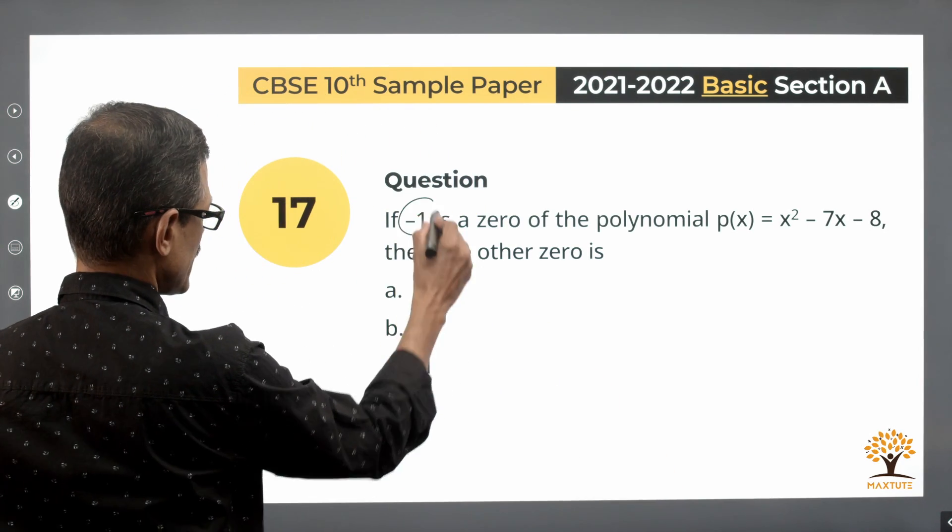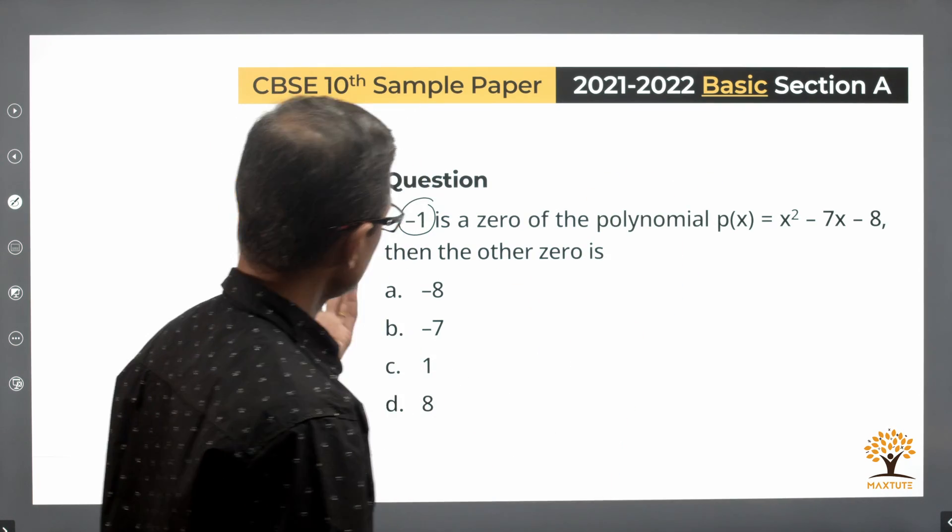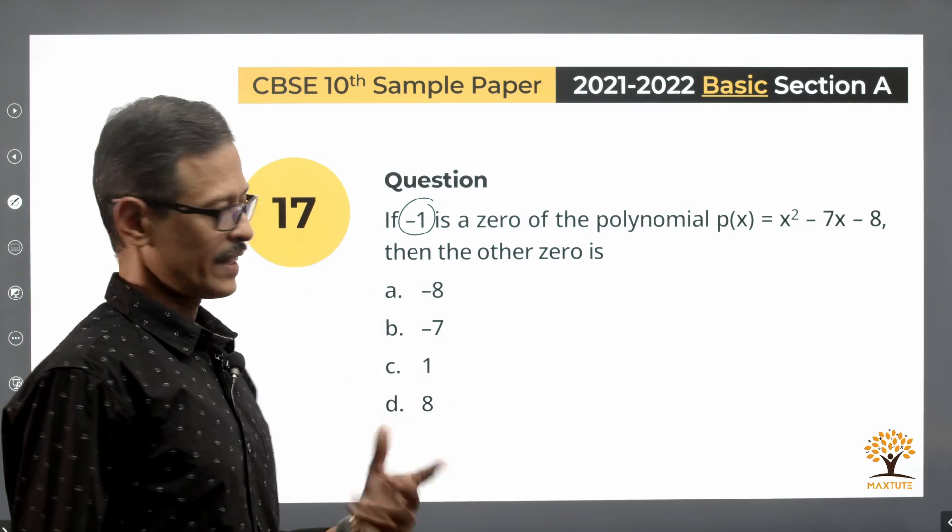If minus 1 is a zero of the polynomial p(x) which is equal to x² - 7x - 8, then the other zero is what they have asked.